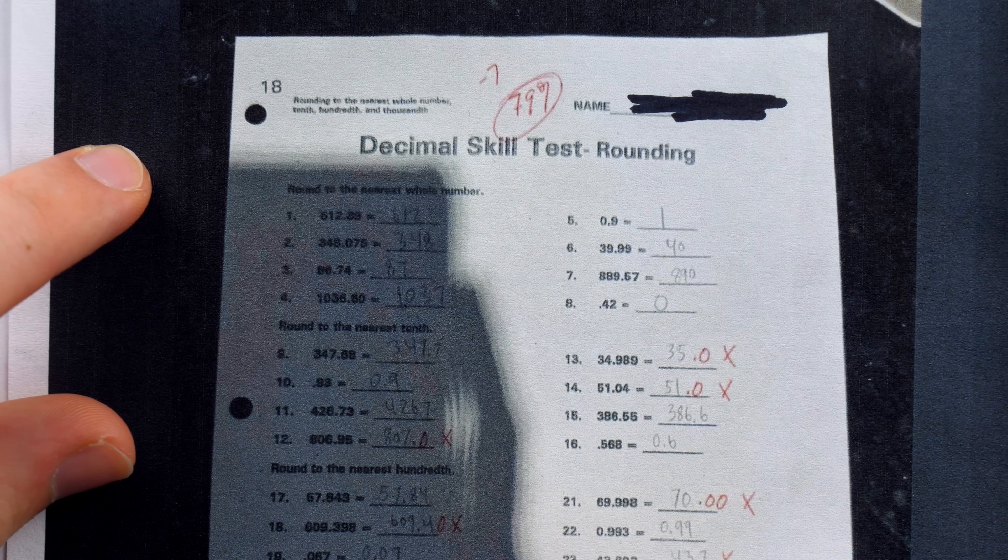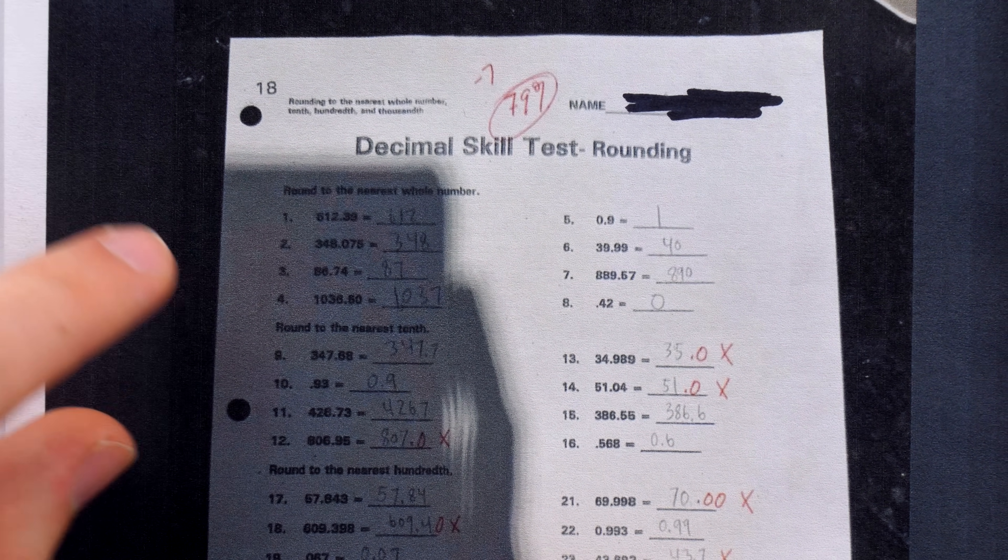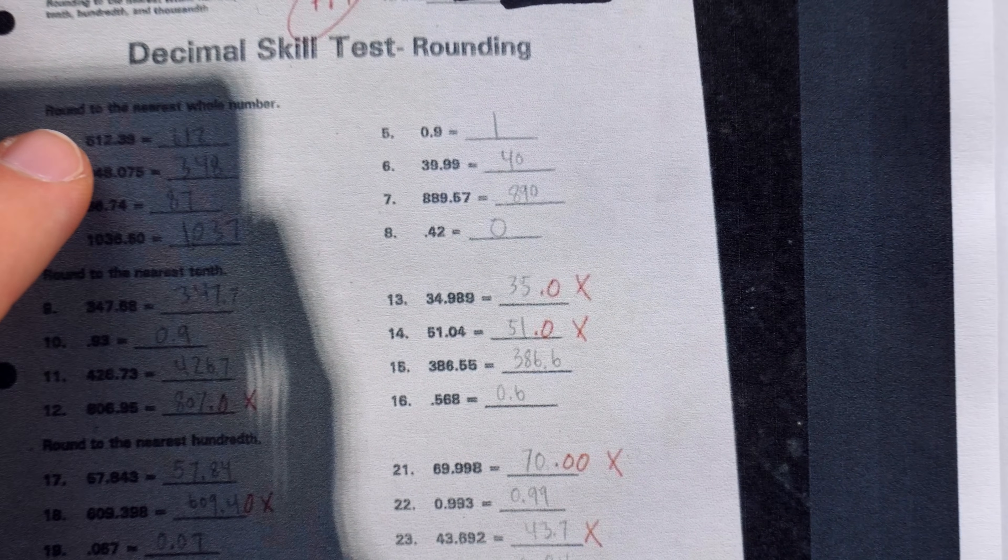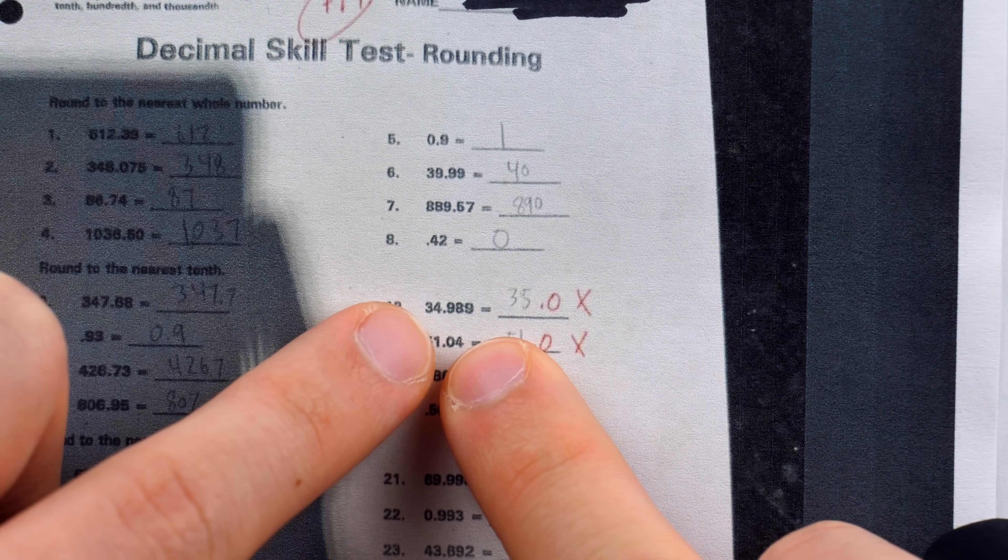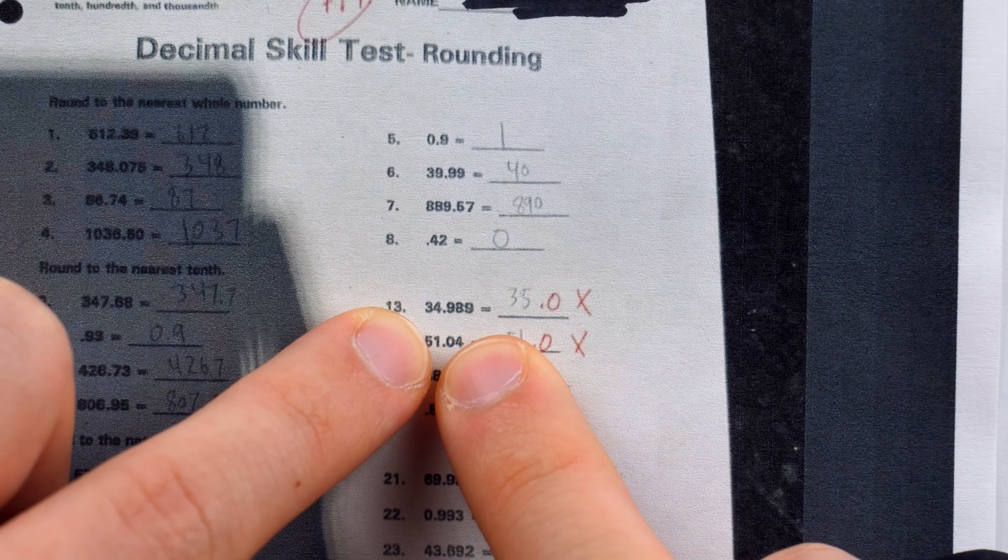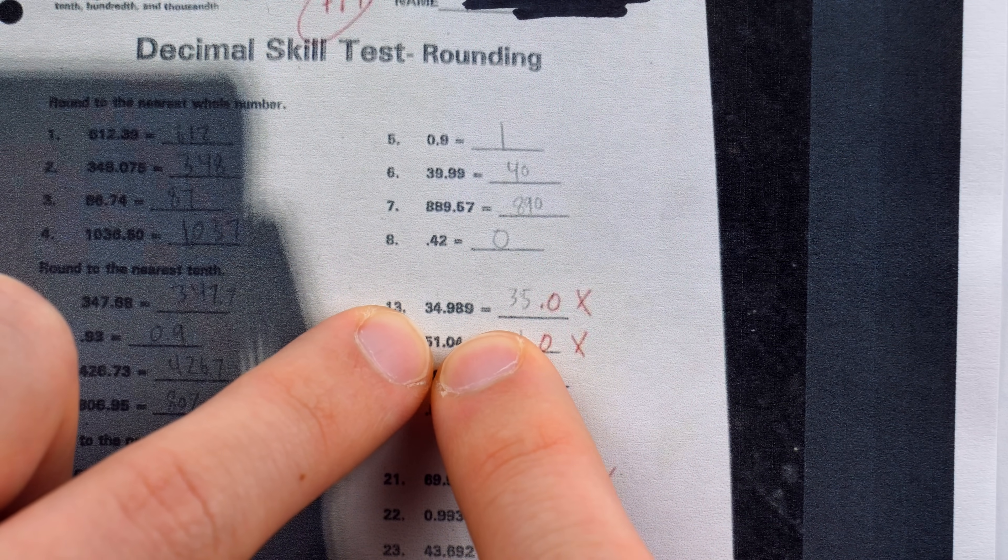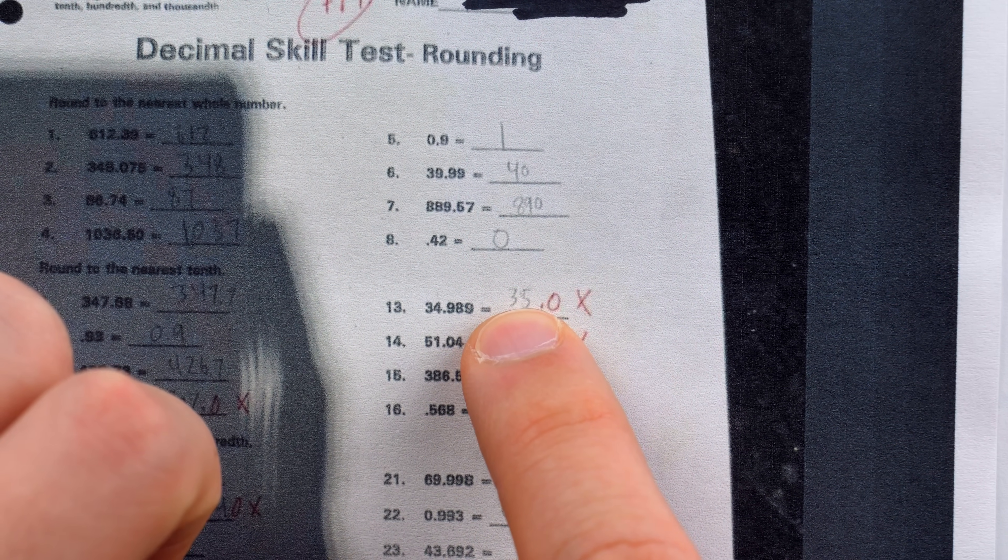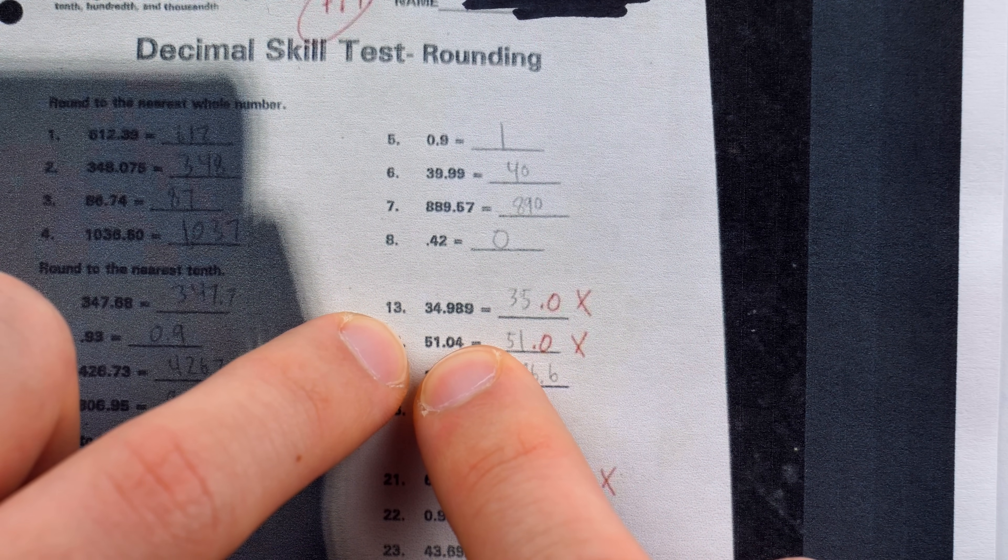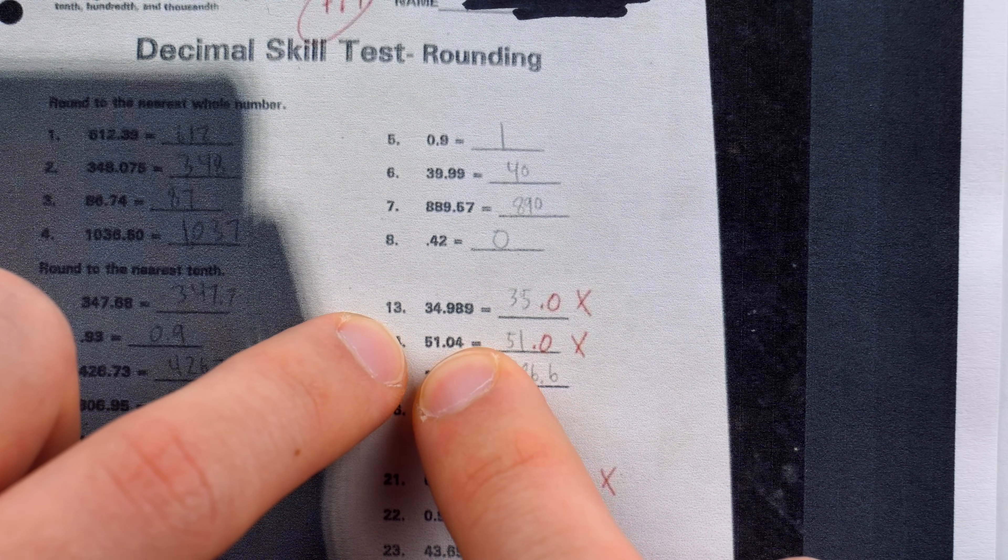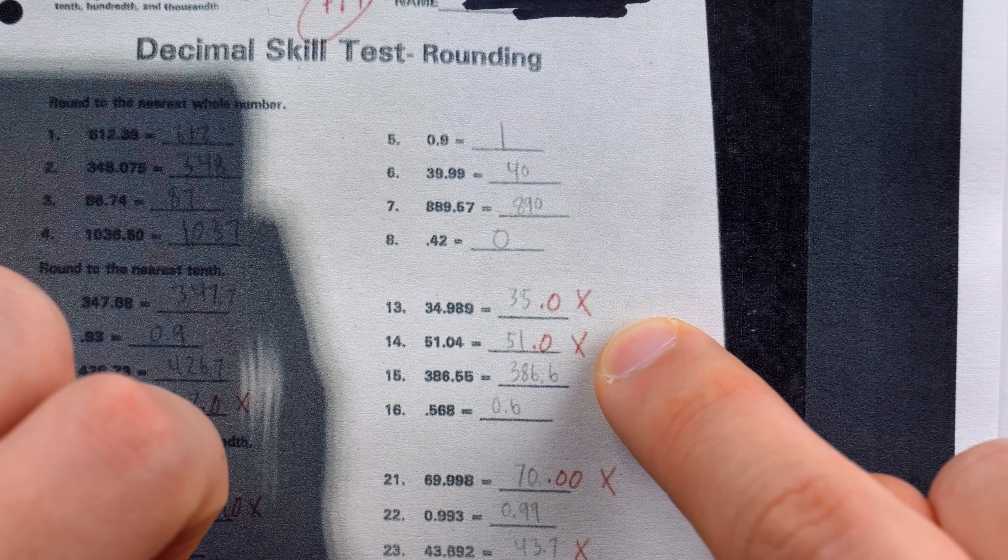I know this section is hard to see due to the darkness, but here it says round to the nearest tenth. This number is 34.989. The student rounded it to the nearest tenth and wrote 35, which was marked wrong. Here the number is 51.04, the student rounded to the nearest tenth and wrote 51, which again was marked wrong.